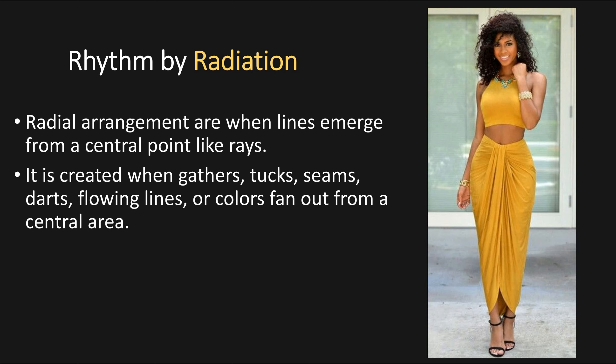Then we have rhythm by radiation. Radial arrangements are when lines emerge from a central point like rays. It is created when gathers, tucks, seams, or darts with flowing lines or colors fan out from a central area. The central point on this woman's outfit is where her belly button is, and the way the skirt is ruched creates lines flowing out in a downward fashion — that is rhythm by radiation.